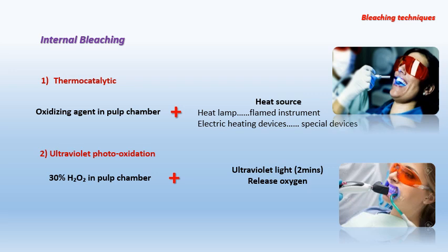In ultraviolet photo-oxidation, the same concept applies. The bleaching agent, which is mainly hydrogen peroxide at 30 to 35 percent concentration, is placed inside the pulp chamber, but the activation source is an ultraviolet light applied for two minutes. This releases oxygen or oxidizing molecules responsible for the bleaching process, as discussed in the previous lecture.